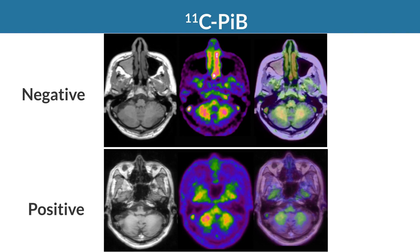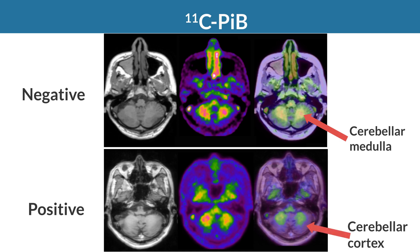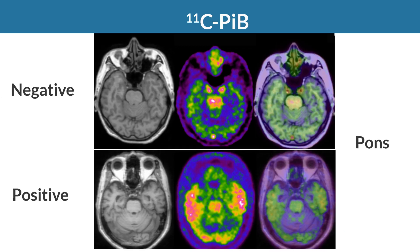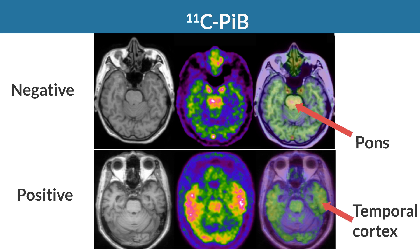Amyloid negative and positive findings in carbon-11 PIB PET at the cerebellar level: cerebellar medulla shows high accumulation in both negative and positive cases, while cerebellar cortex shows very low accumulation in both. At the pons level, pons shows high accumulation due to high white matter content in both cases. Diffuse accumulation in cerebral white matter is observed without any cortical accumulation in a negative case, whereas temporal cortex shows high accumulation in a positive case.